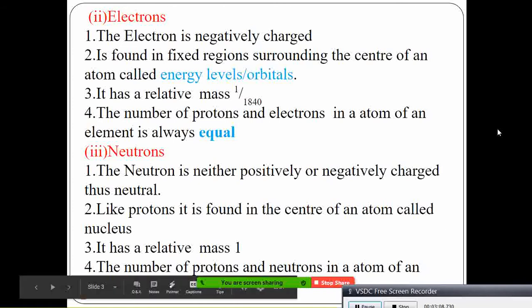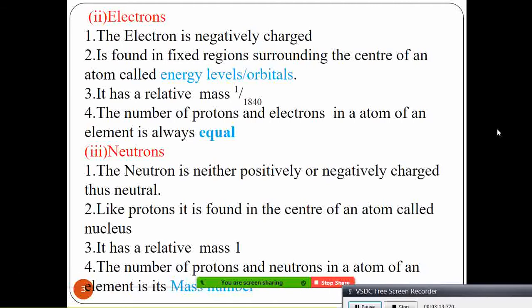The neutrons — are they positively or negatively charged? The answer is the nucleus. Like the proton, the proton is found in the center of the atom called the nucleus. The number of protons and neutrons in an atom of an element is found there.